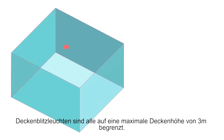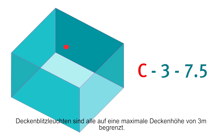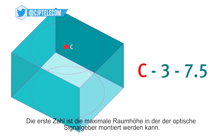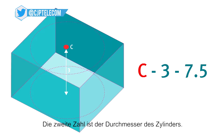A ceiling mounted VAD might be rated as C3 7.5, where C stands for ceiling. The two numbers represent the coverage volume in the shape of a cylinder, where the first number is the maximum ceiling height the VAD can be mounted and the second number is the diameter of the coverage.